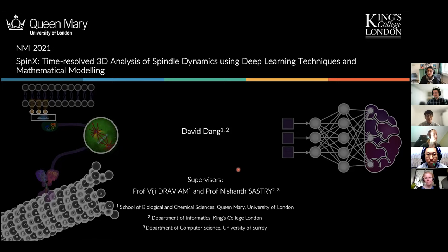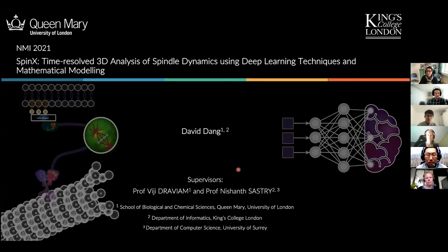David works with Queen Mary University of London, where he still does some teaching. He is also doing his PhD at King's College in deep learning, computer vision, and the ZEISS group. He is also helping in the ZEISS environment, and today he is going to talk about the SpinX software that he has developed — we are really looking forward to hearing more.